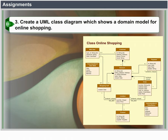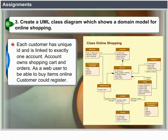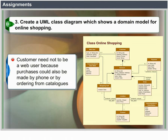Create a UML class diagram which shows a domain model for online shopping. Each customer has a unique ID and is linked to exactly one account. Account owns a shopping cart and orders. As a web user, to be able to buy items, an online customer could register. A customer need not be a web user because purchases could also be made by phone or by ordering from catalogs.